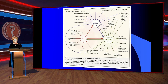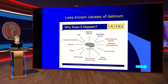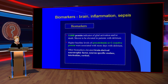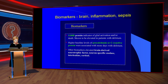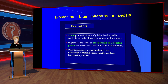Pain is an important factor connected with delirium. Regarding biomarkers, S100 protein, procalcitonin, and C-reactive protein are relevant. Other elevated biomarkers include brain-derived neurotrophic factors, neuro-specific enolase, interleukins, and cortisol.